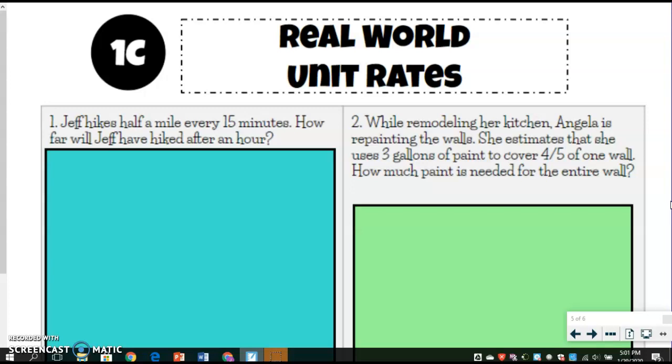So we're going to do real-world unit rates, and so this first one says, Jeff hikes half a mile every 15 minutes. How far will Jeff have hiked after an hour? That's really important to pay attention to because that's going to determine how we set up this problem. So to set this up, we want it to be miles per and then our time.